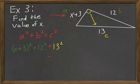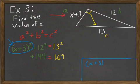I know that the square of 13 is 169, and 12 squared is 144. That part I know. But how do I handle this X plus 3 squared there? Let's do a job to the side.